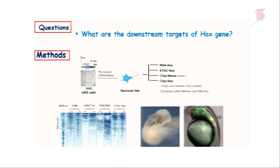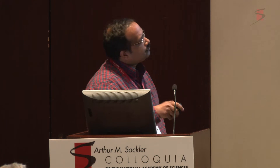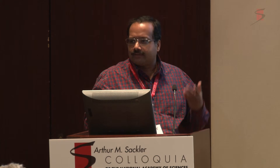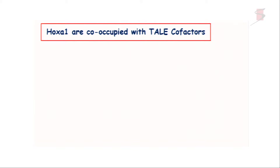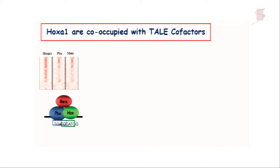These two elements express specifically in the hindbrain, and the expression pattern of this gene in mouse as well as zebrafish are conserved, which shows the functional conservation of these elements across species. We tested many more elements and this result is quite reproducible. We then asked what are the co-factors with which HoxA1 co-occupies chromatin.